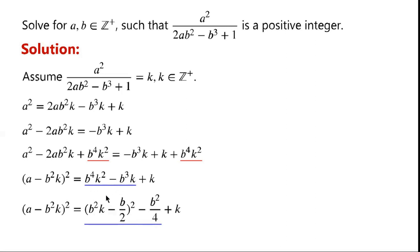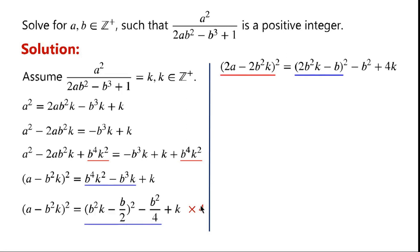The terms on the right-hand side can be written as (b squared k minus b over 2) squared minus b squared over 4. To remove the fractions, we multiply the equation by 4. Since 4 equals 2 squared, the left-hand side becomes (2a minus 2b squared k) squared.